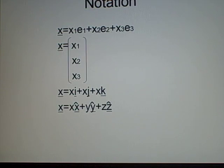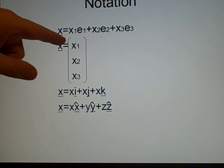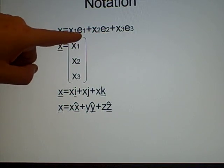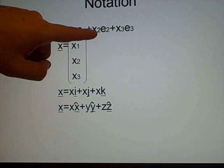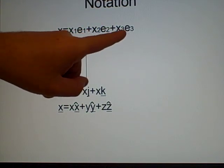Right, now first off we did the notation. We refer to a vector as the letter, so we've got a vector x, and we know it's a vector because there's a line underneath. And what we have here, we've set it out as x1 e1 plus x2 e2 plus x3 e3.